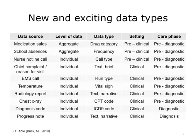Nurse hotline calls, emergency room chief complaints, primary care reasons for visits, EMS calls, temperatures taken in a clinical setting, radiology reports, and chest x-rays are all forms of individual-level syndromic surveillance data taken at the pre-diagnostic stage. Diagnostic phase data includes diagnosis codes and text taken from progress notes.